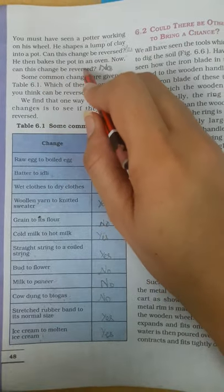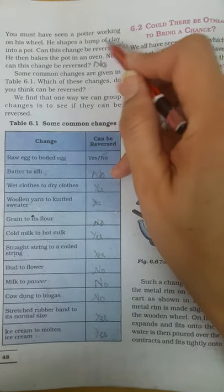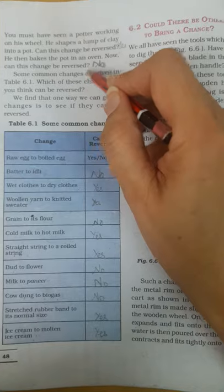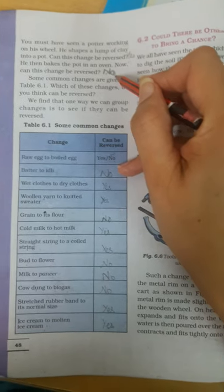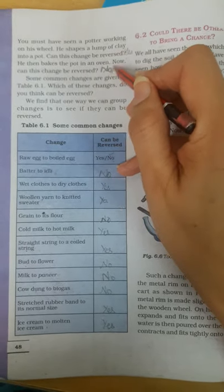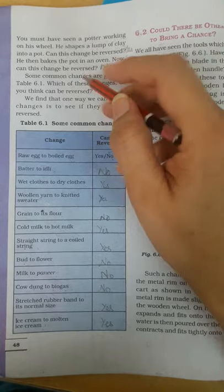Yes. Once he bakes the pot in an oven - usghada ko paka leta hai. Can this change be reversed? No. Once it is baked we cannot get back the clay.